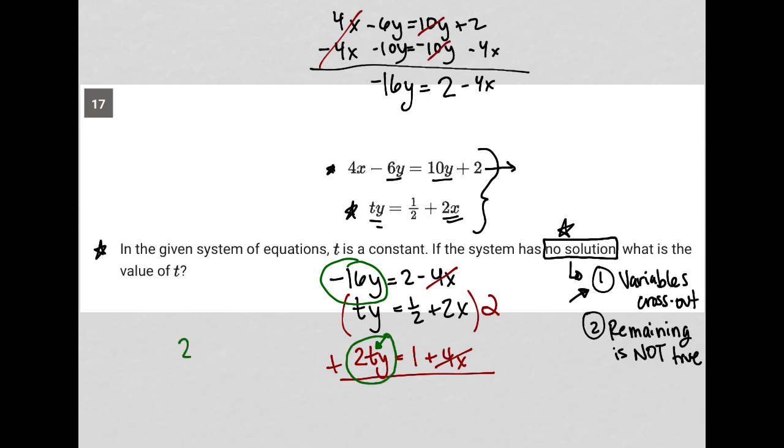What would t need to be? What would t need to be in order for negative 16y added to positive 2ty to cross out? Well, we know that positive 2ty would need to equal a positive 16y because that's the only way that it would cross out a negative 16y. Well, how do I get that to happen? Well, I can divide both sides by 2y here to solve for t. And what I find is that t must be equal to 8.